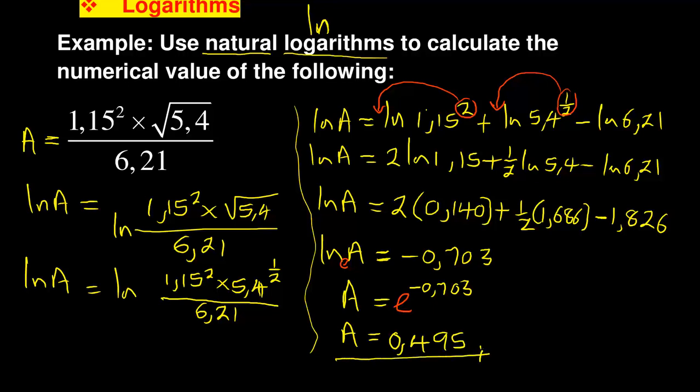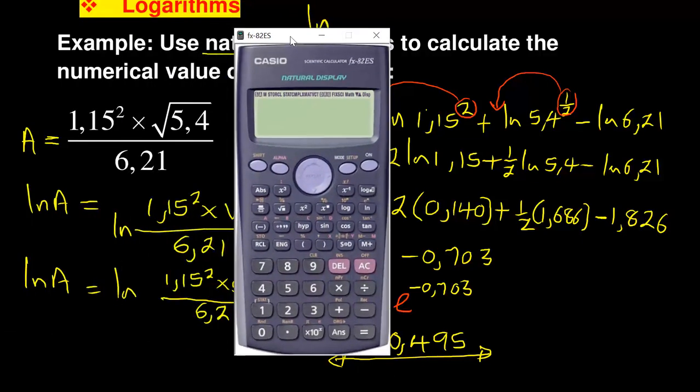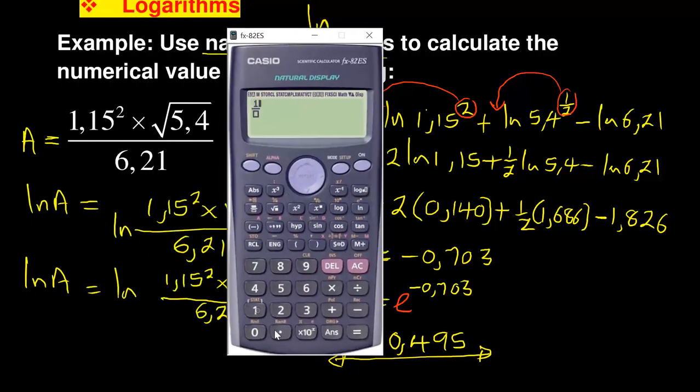So that is the value of that expression when we simplify it. But obviously it is important for you to test if your answer is correct. What you do is go to the original one, use a calculator and find out what that answer would have been with the calculator: 1.15 squared times square root of 5.4 divided by 6.21. If you just enter it in the calculator like that, you can see it's giving you 0.4948, but if you round off to three decimal places there, it will actually give you the exact one that we got as 0.495.